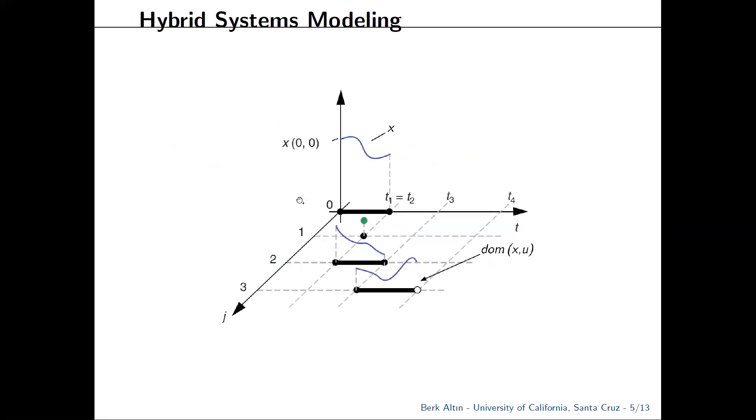Graphically, this is how our solution could look like. We start at our initial condition and flow until time T1 which equals T2. We have two consecutive jumps and the solution flows again until time T3, then jumps again, then flows, and so on.